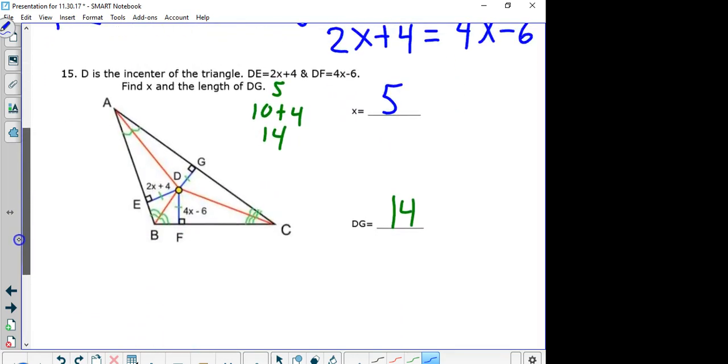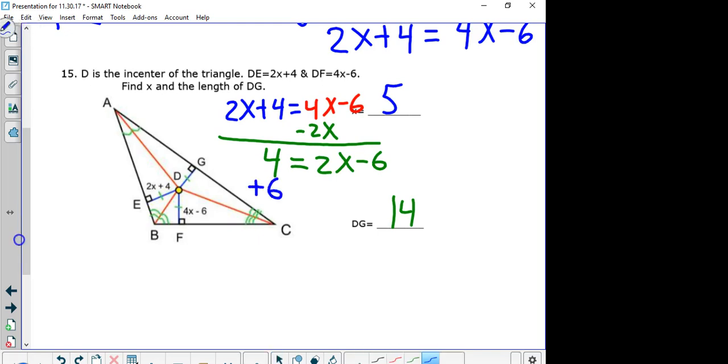All right. Here's the answer to number 15. Now, the way we found the answer to 15, we did this. We solved the equation 2x plus 4 equals 4x minus 6. And the way we did that, we began by subtracting 2x. And we were left with 4 equals 4x minus 2x is 2x minus 6. If I add 6 to the left-hand side, we're going to be left with 4 plus 6 is 10, equals 2x. Finally, we find x by 10 divided by 2 equals x. So 5 equals x.